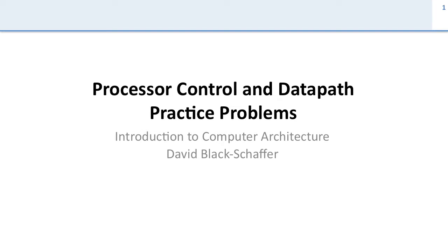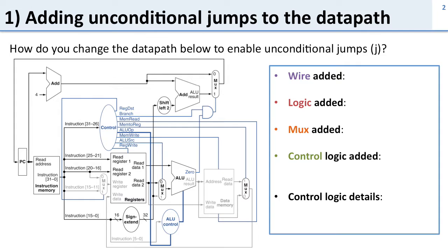Let's go through the practice problems for processor control and the datapath. The first problem is about adding unconditional jumps to the datapath. Here's the datapath we had, and the question is: how do we change the datapath to enable unconditional jumps?